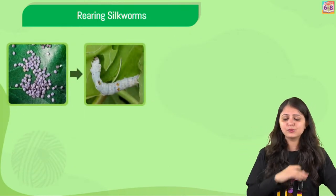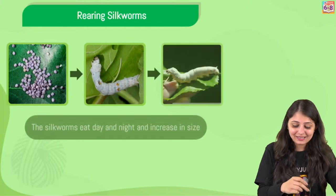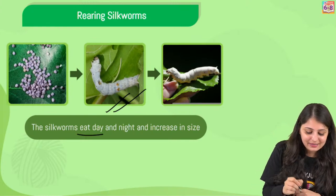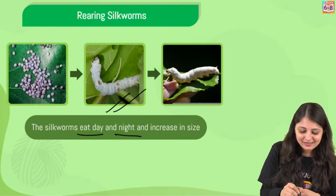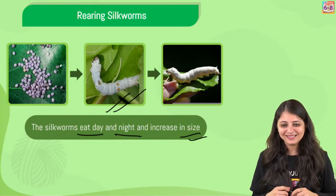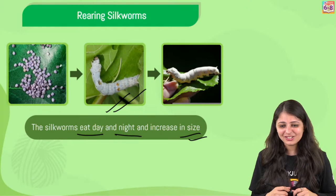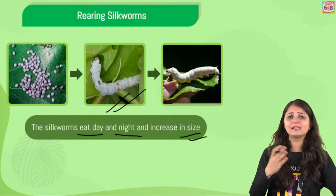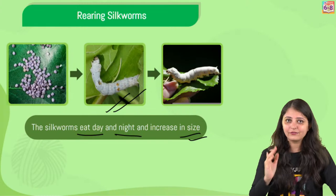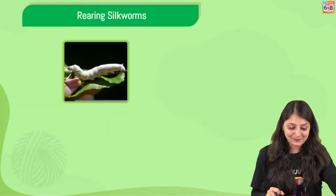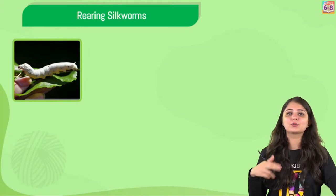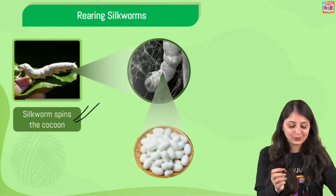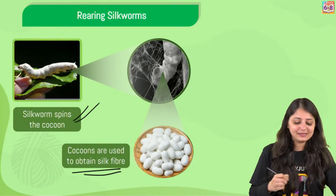When suitable temperature is provided, the larva or caterpillar or silkworm comes out of the egg. Then it eats day and night and increases in size. About 25 to 30 days after, they stop eating and then they start to spin cocoons - as you can see, the silkworm spinning the cocoon. Cocoons are used to obtain the silk fiber.